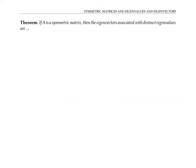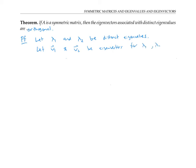Next, let's prove that if A is a symmetric matrix, then the eigenvectors associated with distinct eigenvalues are orthogonal. Let lambda one and lambda two be distinct eigenvalues — they are different numbers. Let v₁ and v₂ be eigenvectors for lambda one and lambda two, respectively. What we want to show is that v₁ dotted with v₂ is zero, but we'll start by looking at lambda one times v₁ dotted with v₂.